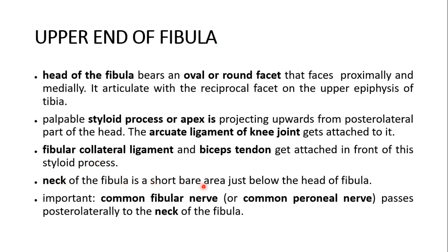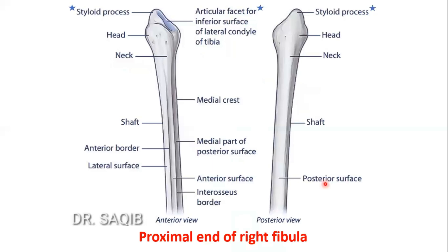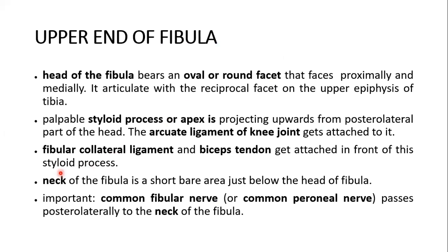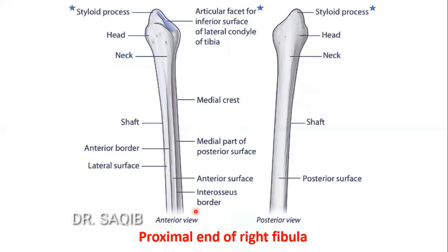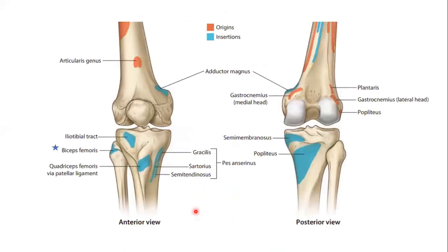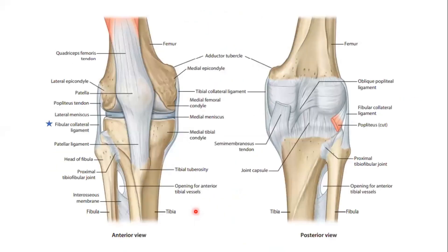The neck of the fibula is a short, bare area just below the head of the fibula. You can see the neck — this is the head above and this is the narrow neck. Importantly, the common fibular nerve, also called the common peroneal nerve, passes posterolateral to the neck of the fibula. It can be damaged by tight bandaging or a plaster cast here. This is also the fibular collateral ligament attachment.